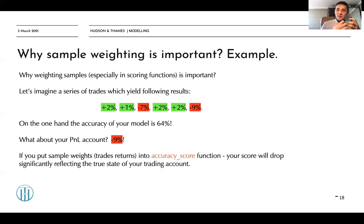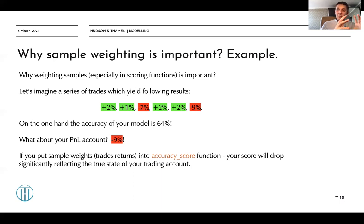That's why it is so important to use sample weights in both scoring and training. When you train the model with sample weights, you explicitly tell it to pay more attention to samples that generated huge returns or losses — you put the absolute values of the returns as weights. As a result, the model will better protect those trends which have a significant impact on your trading account.